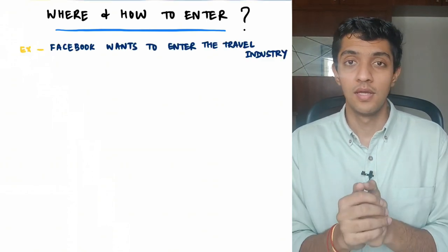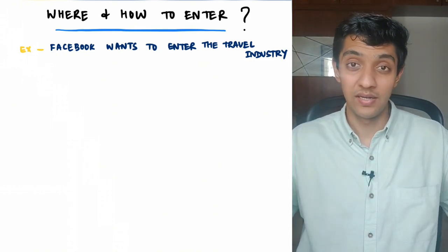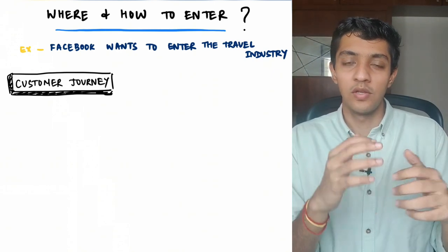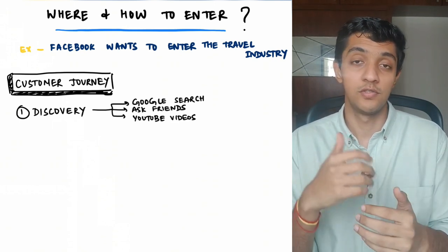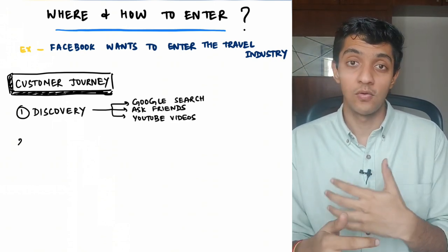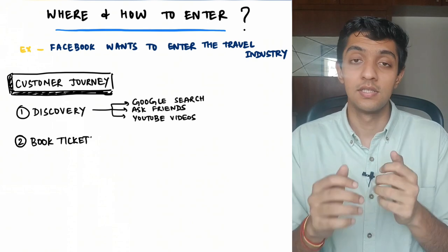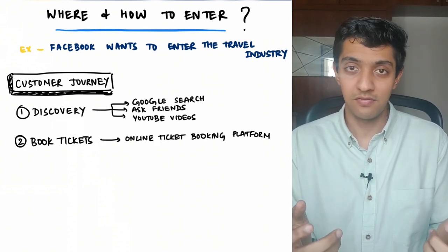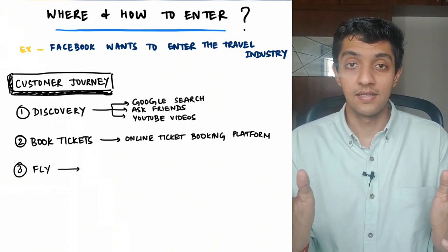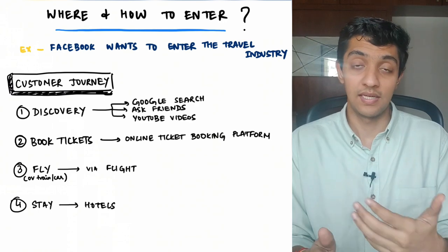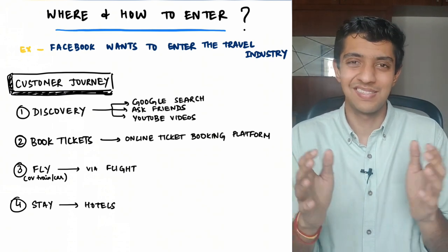Let me take an example. Imagine Facebook decides they want to enter the travel industry. Travel is a really vague term, so let's break it down. When you want to travel somewhere, first you explore — you go on Google, search for places, watch a YouTube video, ask friends, go to Instagram or Facebook. Once you've decided where to go, the next step is to book tickets, likely on an online booking platform. Then you travel — get on a flight and fly. Then you stay at a hotel. So there are four phases: exploration, booking, travel, and accommodation. There could be more, but let's keep it to these four.